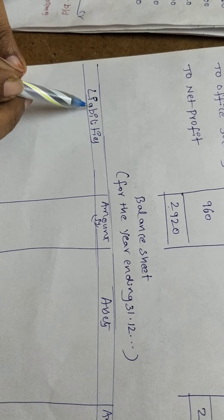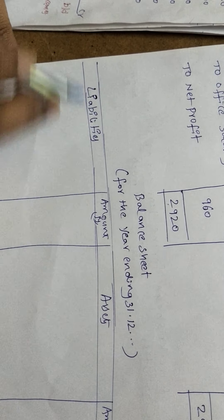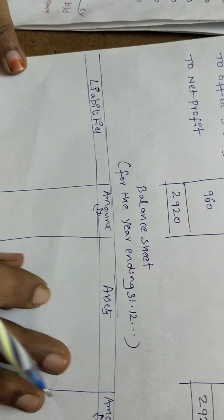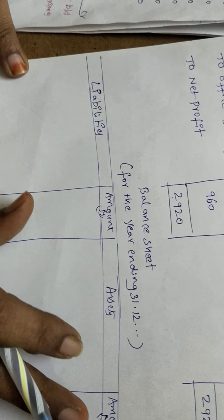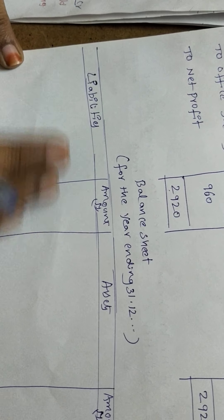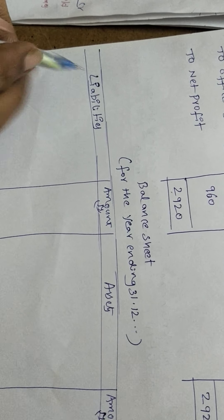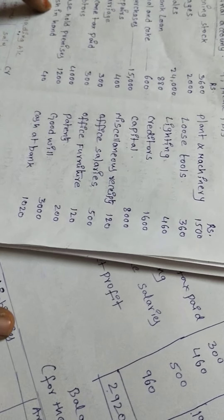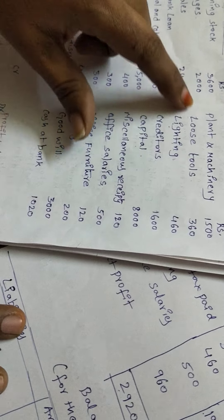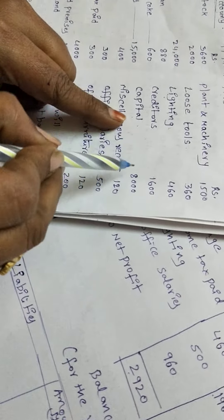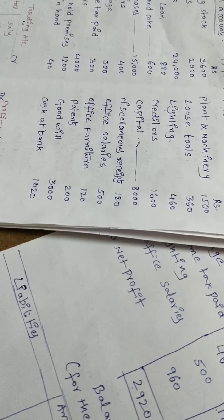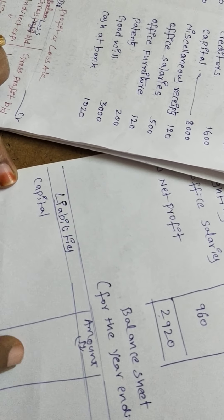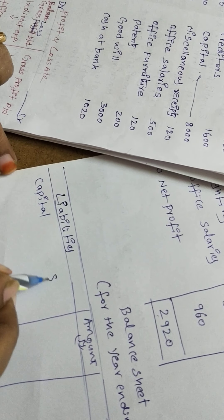On the left-hand side we record capital and liabilities; on the right-hand side we record assets. First item: capital. We record capital of 8,000 in the inner column.